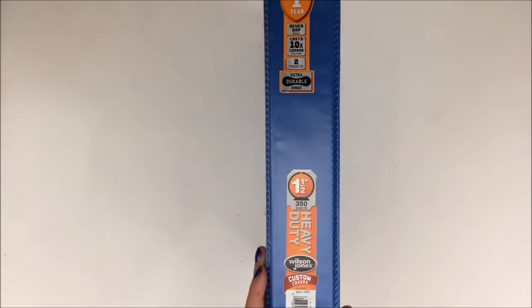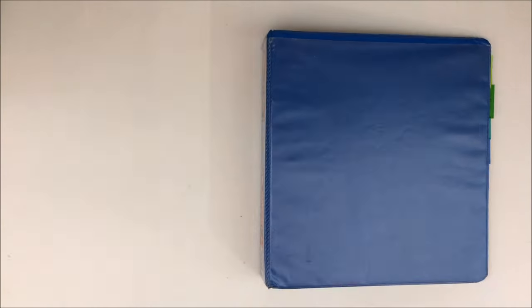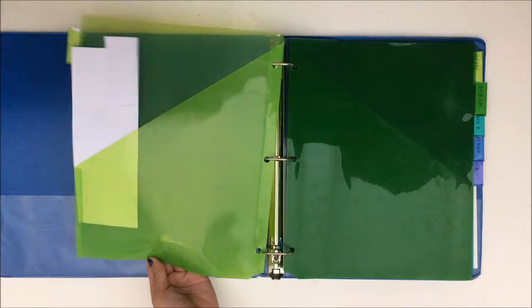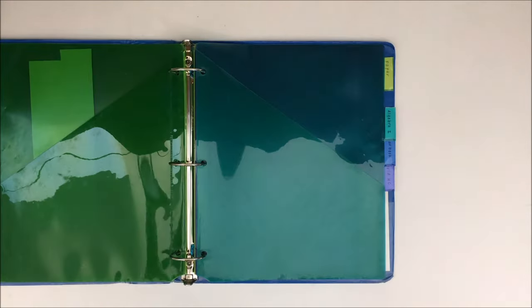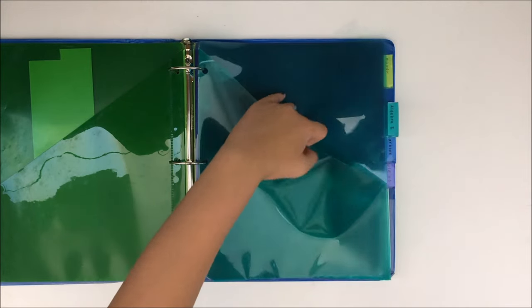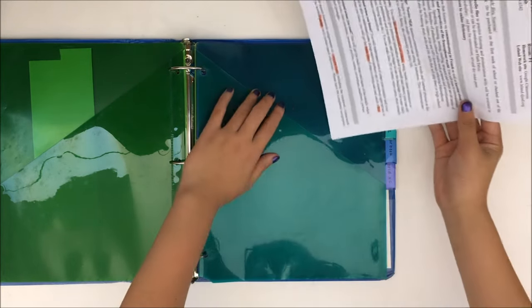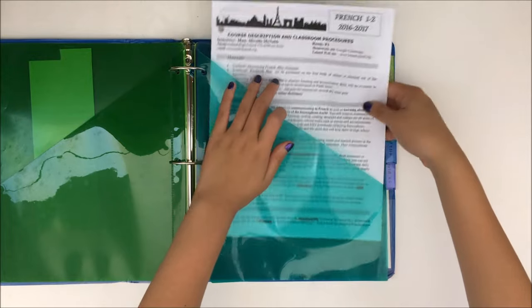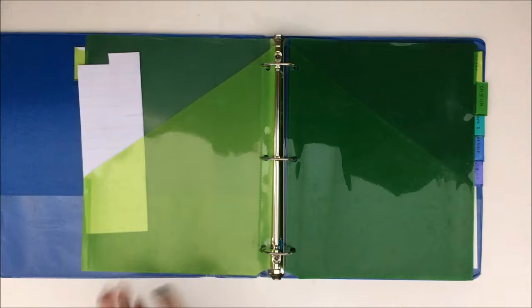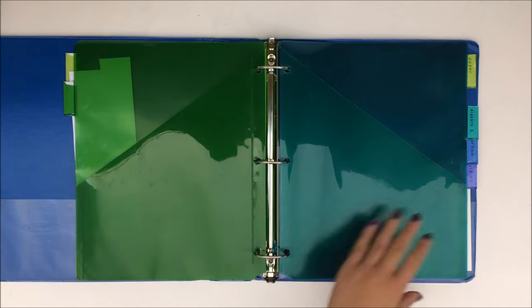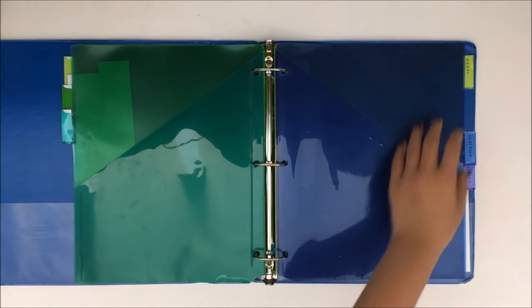Method number one is to use a large binder, this is a 1.5 inch binder, and divide it into parts for each class using dividers. I would recommend using dividers with pockets, like these, because you can separate papers that are more important, like a syllabus or assignment sheet. If you don't have pocket dividers or even regular dividers, I'll be showing you how you can make them later in this video.